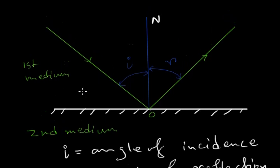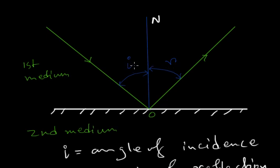Light from the first medium falls on the surface of the second medium, gets reflected, and returns. The angle made by the incident ray with the normal is the angle of incidence, and the angle made by the reflected ray with the normal is the angle of reflection. There are some rules governing how light gets reflected, which will be discussed in a later video. Thank you.